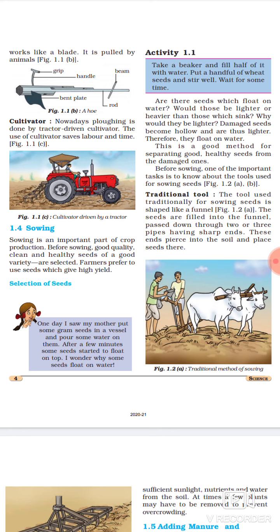Next is cultivator. Nowadays, plowing is done by tractor driven cultivator. The use of cultivators saves labor and time. Plow ki diagram mein abhi hamne dekha tha ki usko do bull pull kar rahe the, aur ek aadmi usko chala raha tha. Lekin usse kya hota hai, labor badh jata hai aur time bhi bahut lagta hai, kyunki technology ya phir kisi bhi machine ki speed, ek aadmi se zyada hi hoti hai. Isliye plow ki jagah, aaj kal cultivators use mein liye jate hai, kyunki ye tractors se chalte hai. To cultivators use karne se kya hota hai, labor bhi bachta hai, aur time bhi bach jata hai.